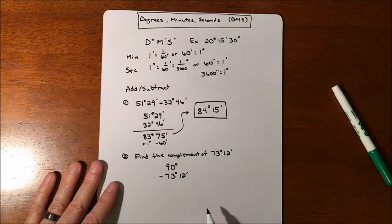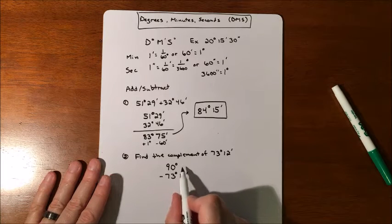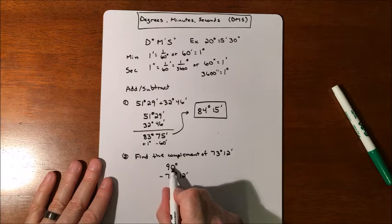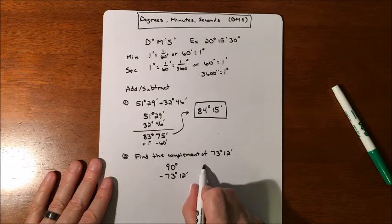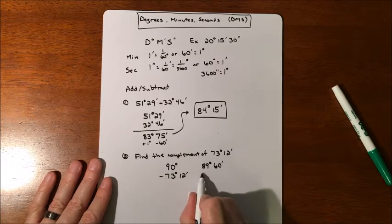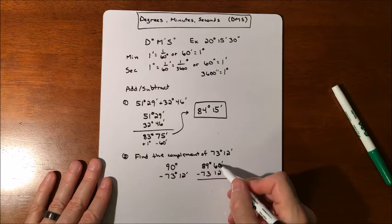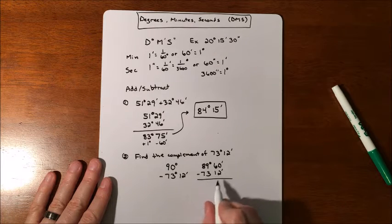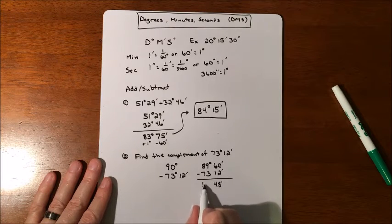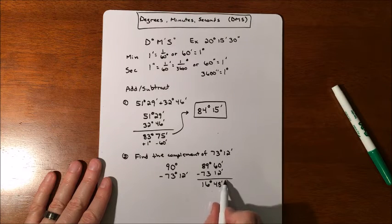So this works very much like you would in regular subtraction. You're trying to subtract 12 from nothing. So that means we need to borrow. So we're going to take this 90 degrees and we're going to borrow one degree's worth of time, like one hour's worth of time. So that means we're going to subtract 60 degrees. So that 90 becomes 89 degrees, 60 minutes. And now we can subtract 60 minutes minus 12 minutes is going to get us 48 minutes. And then 89 minus 73 is 16. So we have 16 degrees, 48 minutes.